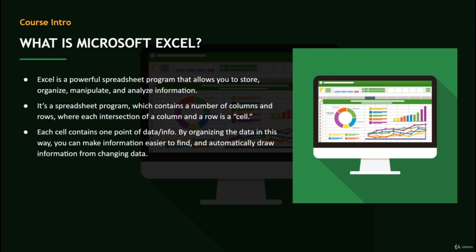By organizing data in this manner you can make information easier to find and automatically draw information from changing data. You can create a variety of different shortcuts and formulas that will allow you to add up information. For example, if you're looking at your budget and adding up all your expenses within a given month, there are formulas that will automatically add it all up and give you the total amount spent per category.